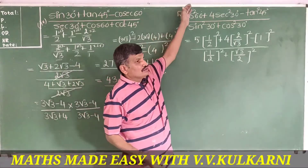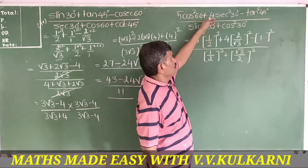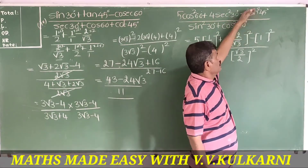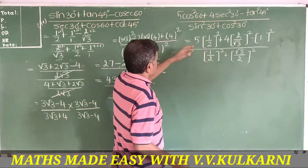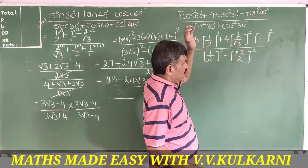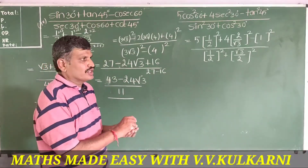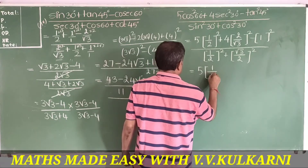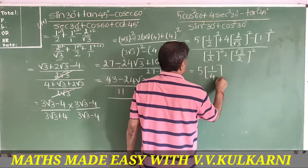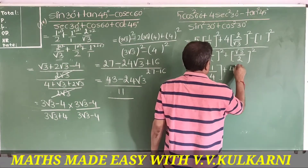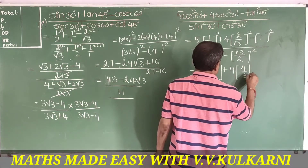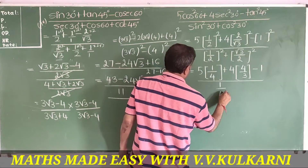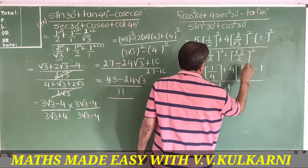sin60 = √3/2, cos60 = 1/2, cos30 = √3/2, so sec30 = 2/√3. Once you put the values — everything is very simple, as studied in class 6th or 7th standard. This gives 5 into 1/4 plus 4 into 4/3 minus 1, and the denominator is (1/2)² + (√3/2)² = 1/4 + 3/4.